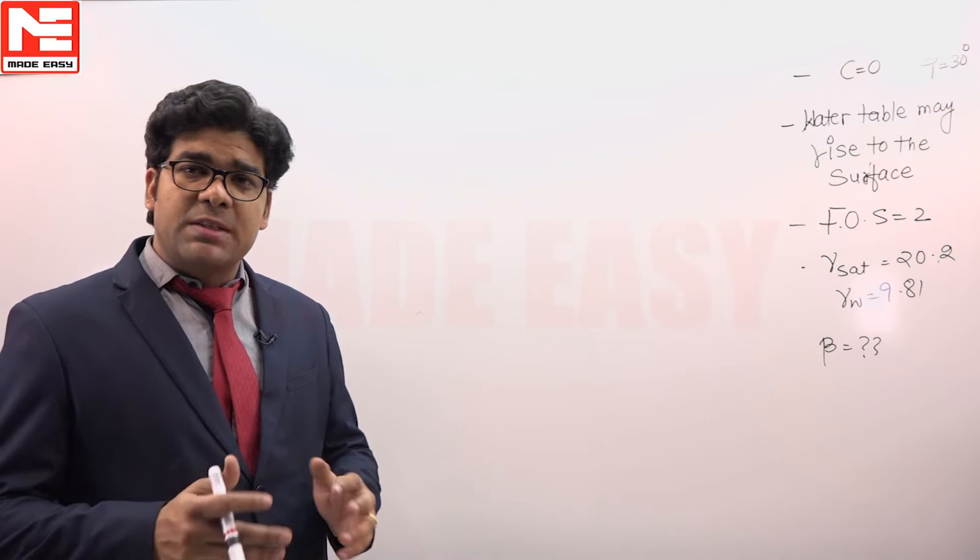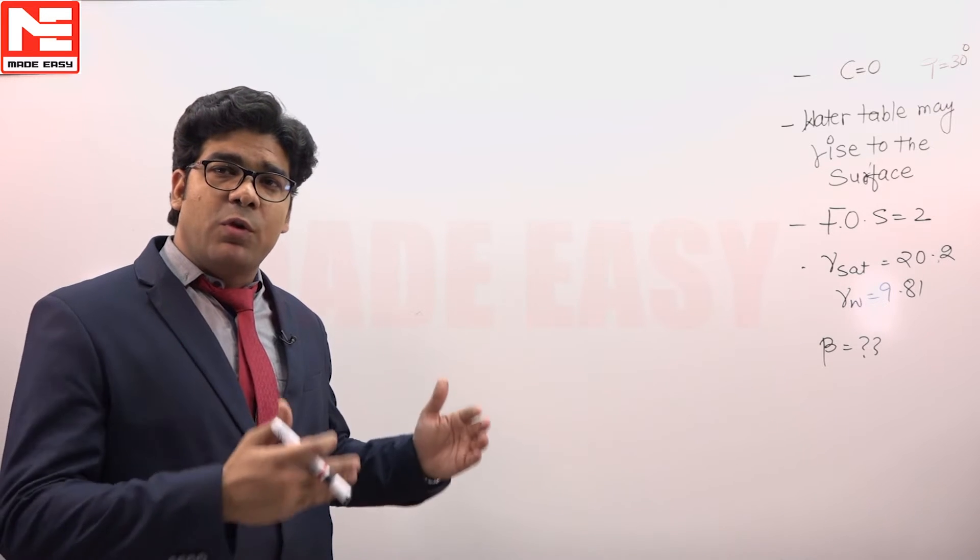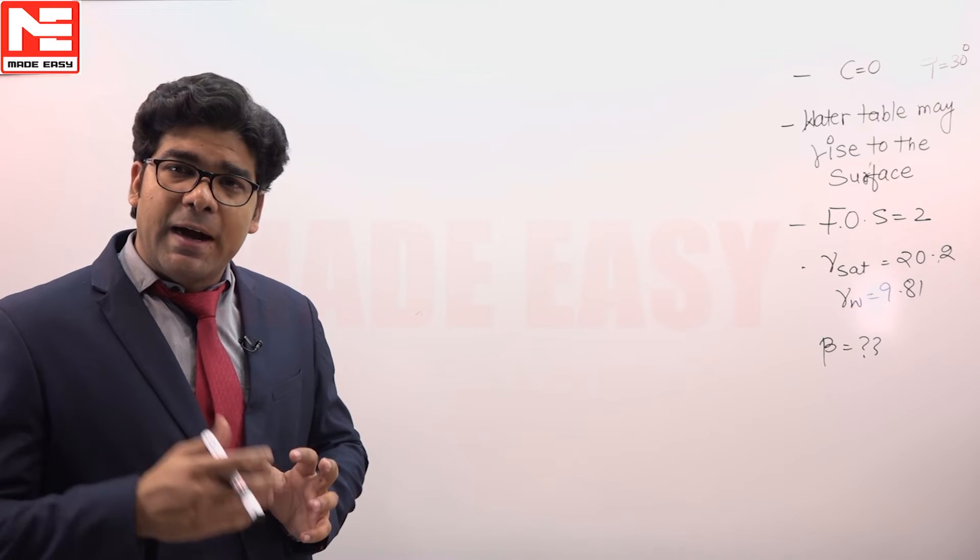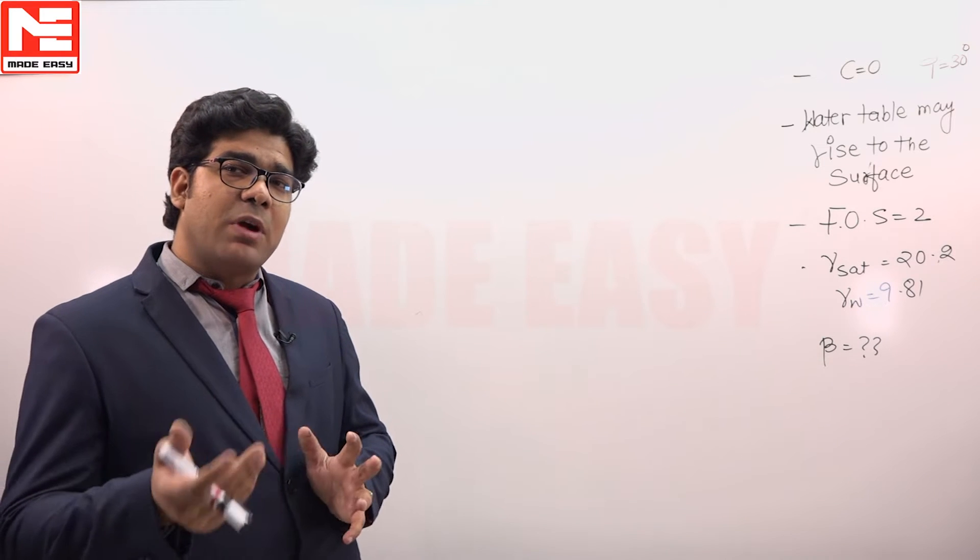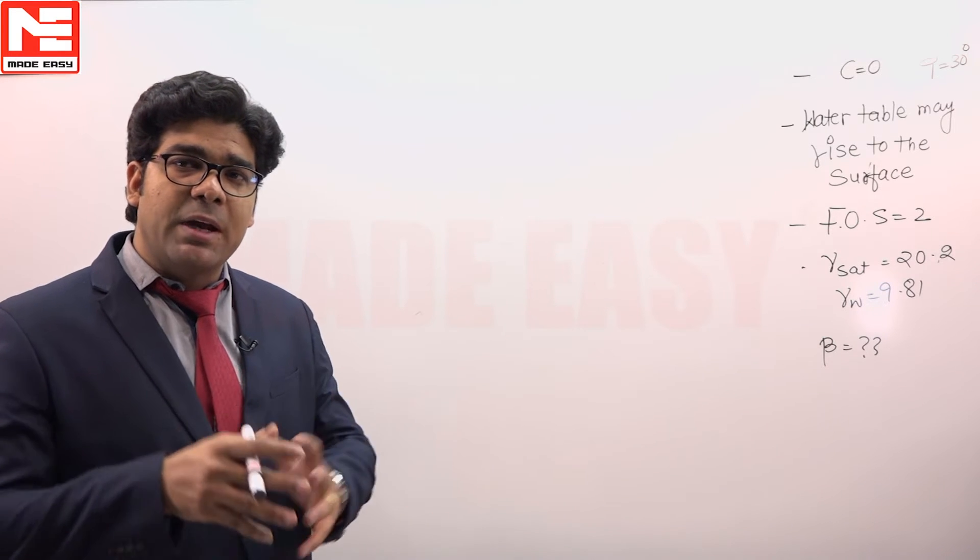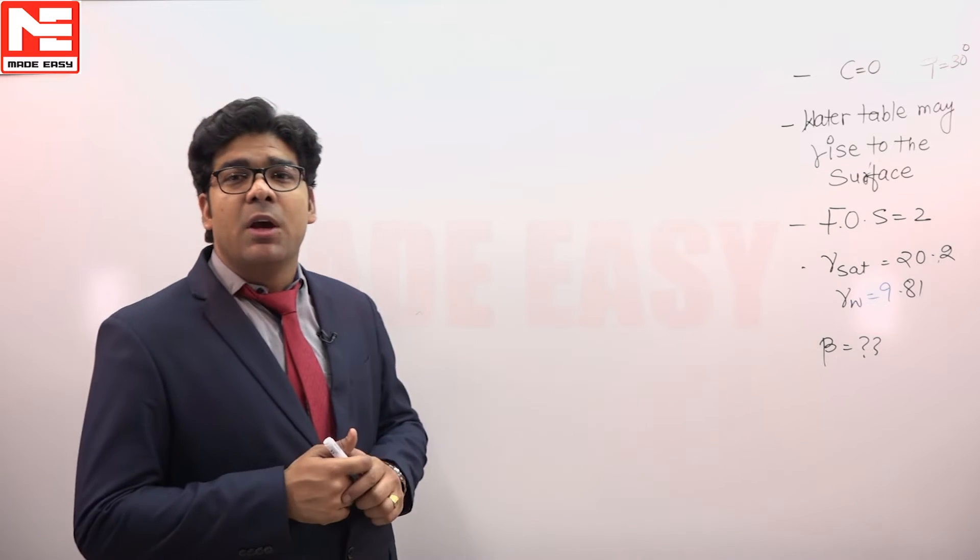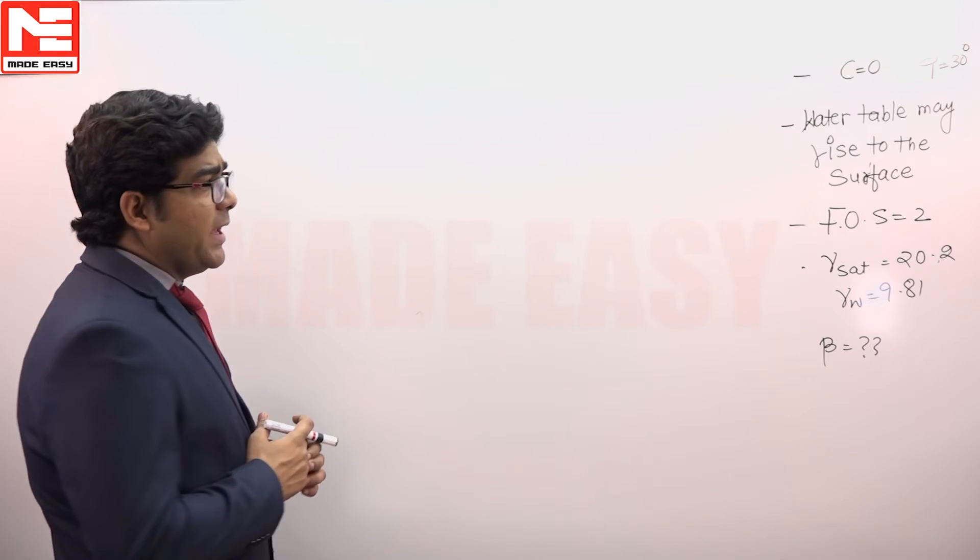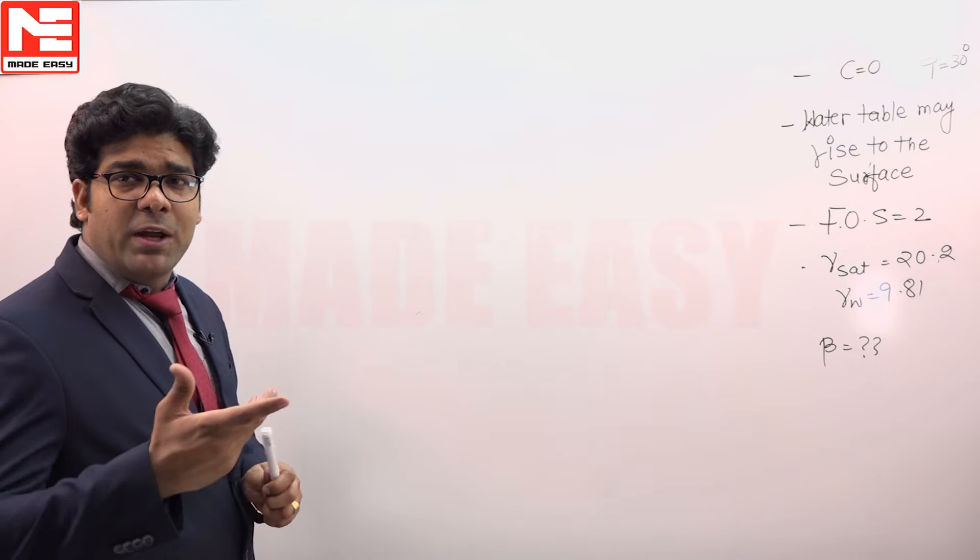In this case we have to consider that water is moving, water is flowing at the ground surface only, and according to that condition we have to calculate beta, and that will be the beta max, the safest beta max. So if the water table is flowing at the ground,